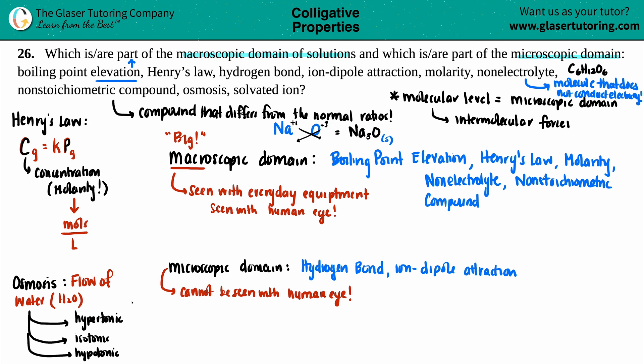Can we see the difference between these types of solutions? Yeah. I mean, especially if you're talking about biology, with red blood cells and swelling, red blood cells and shrinking, being flaccid or turgid if you're talking about plants with their osmosis. So, in this case, osmosis would be classified as a macroscopic domain. Can use everyday equipment to see the transfer of water from one part of the membrane to the other.